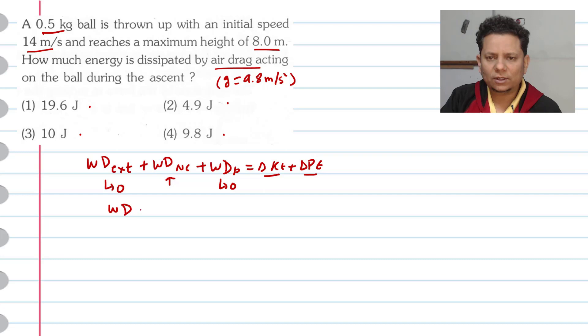So work done by non-conservative forces, which is air drag, will equal change in kinetic energy. Change in kinetic energy we write as half m(v² - u²) plus change in potential energy we write as mgh. The ball reached a height of - what's given? Eight meter. So eight meter height the ball reached, and initial velocity u was given as 14.